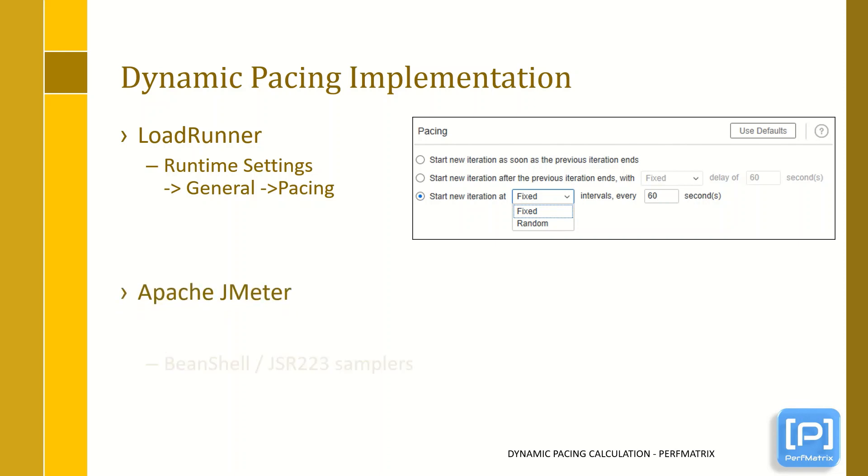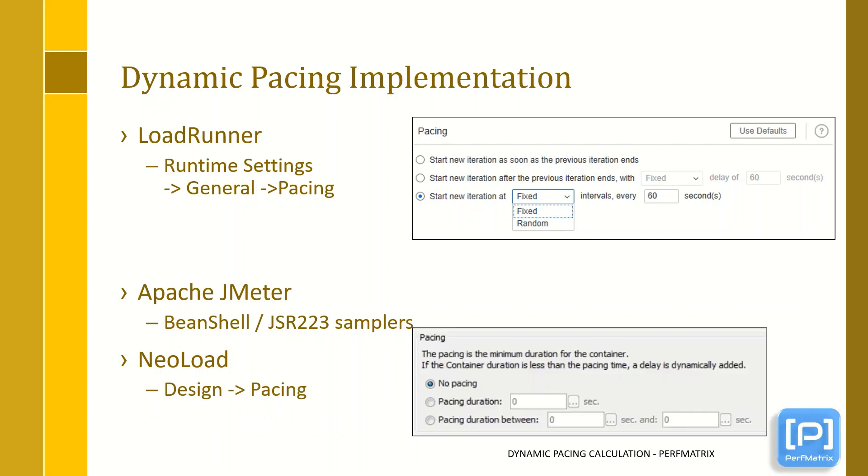In JMeter, you need to write the custom code by adding BeanShell or JSR223 sampler at the end. I will provide the code in the next video. In NeoLoad, you can define pacing in the container. NeoLoad automatically adds dynamic delay in case the container's duration is less than the defined value.